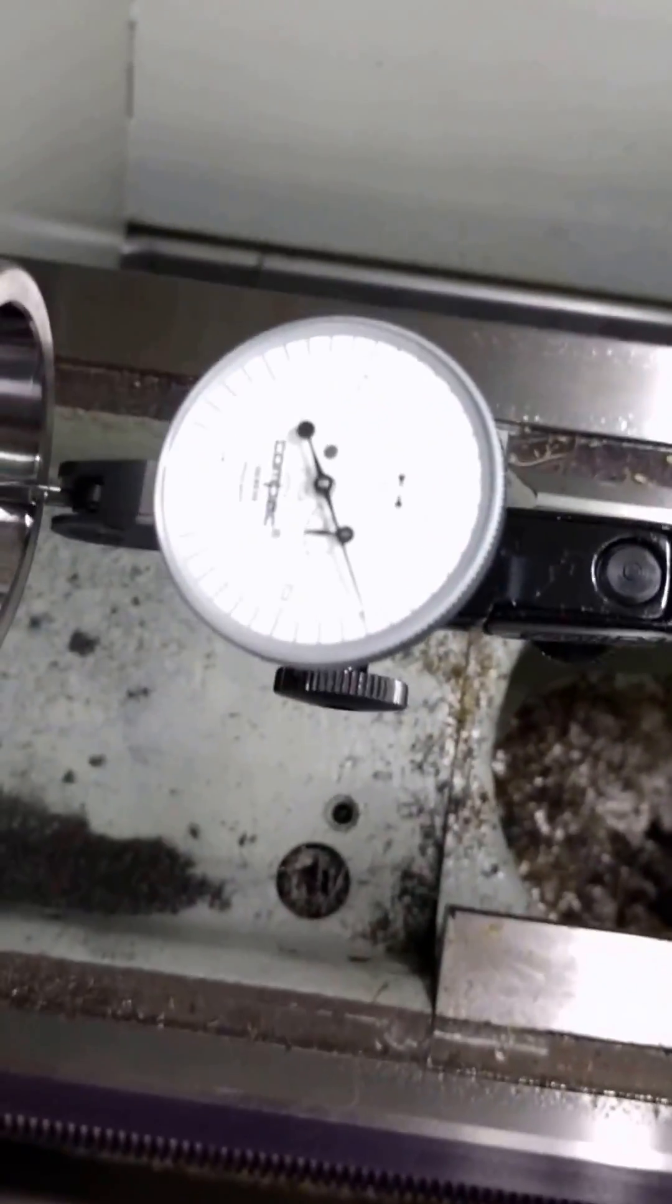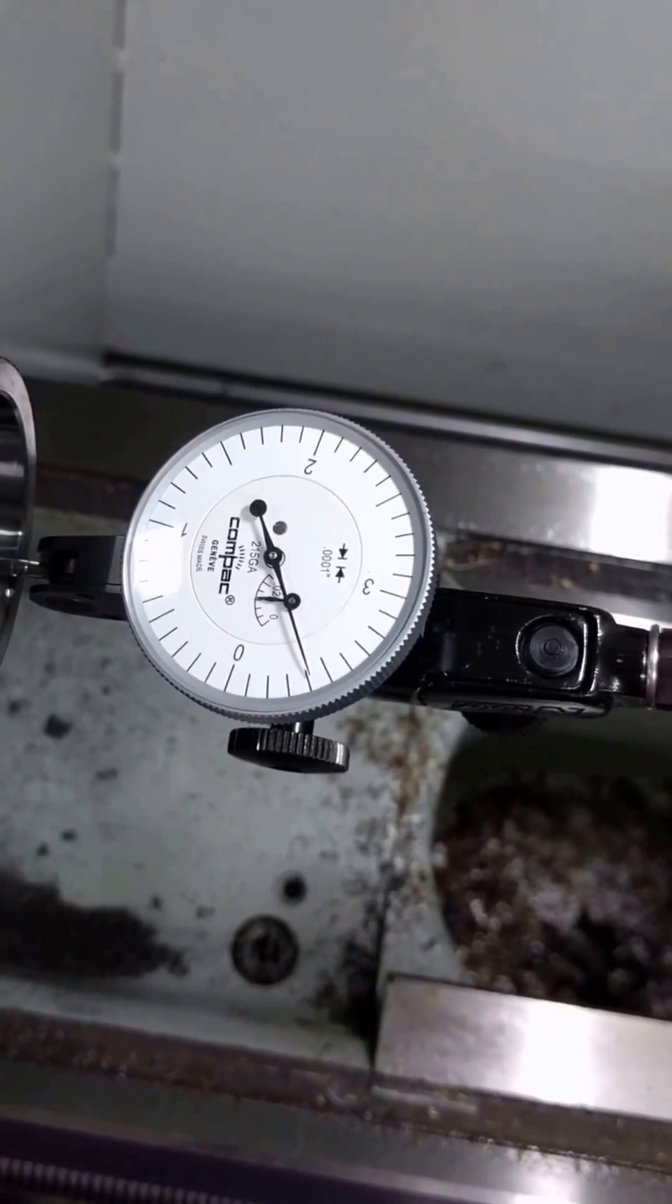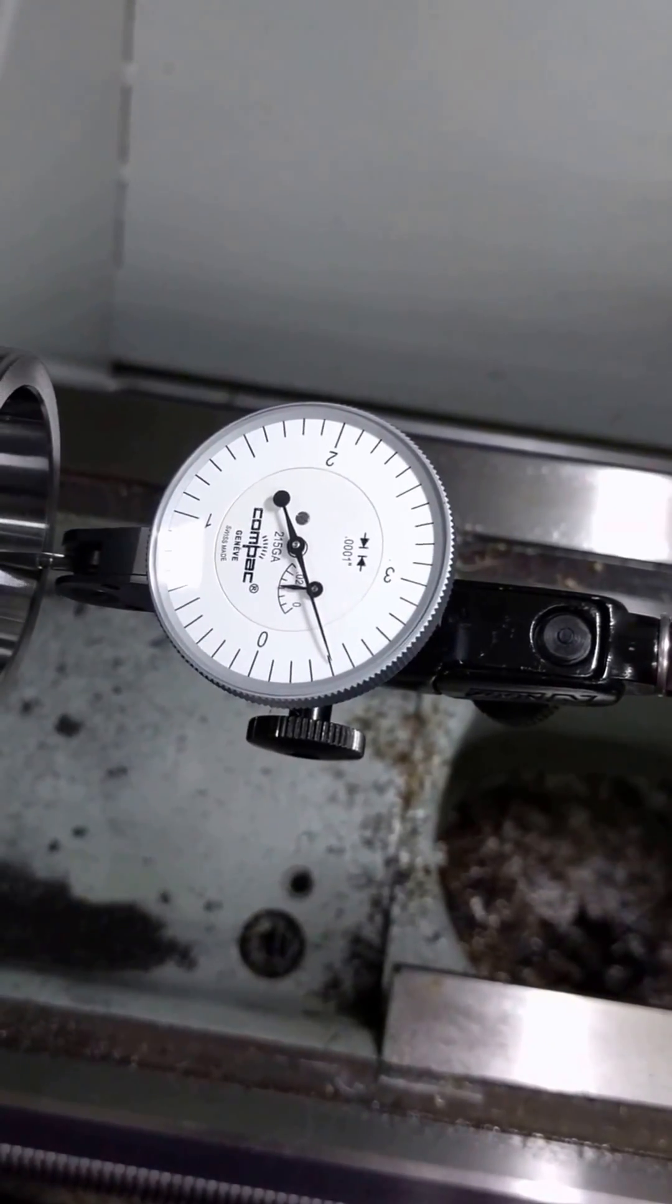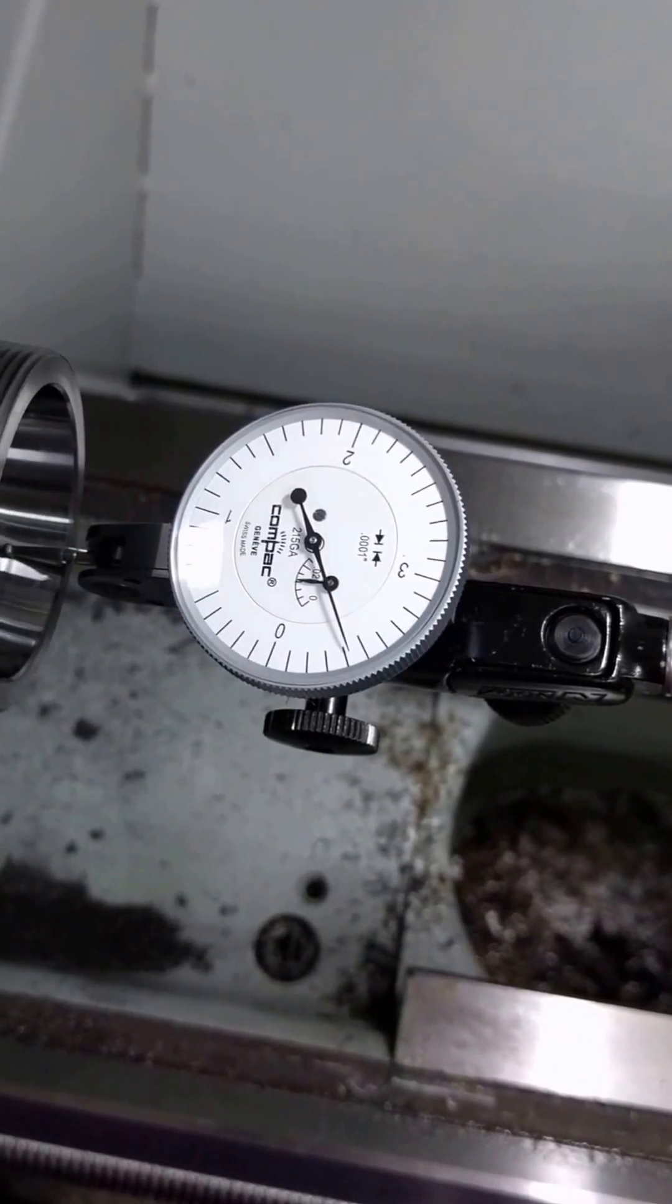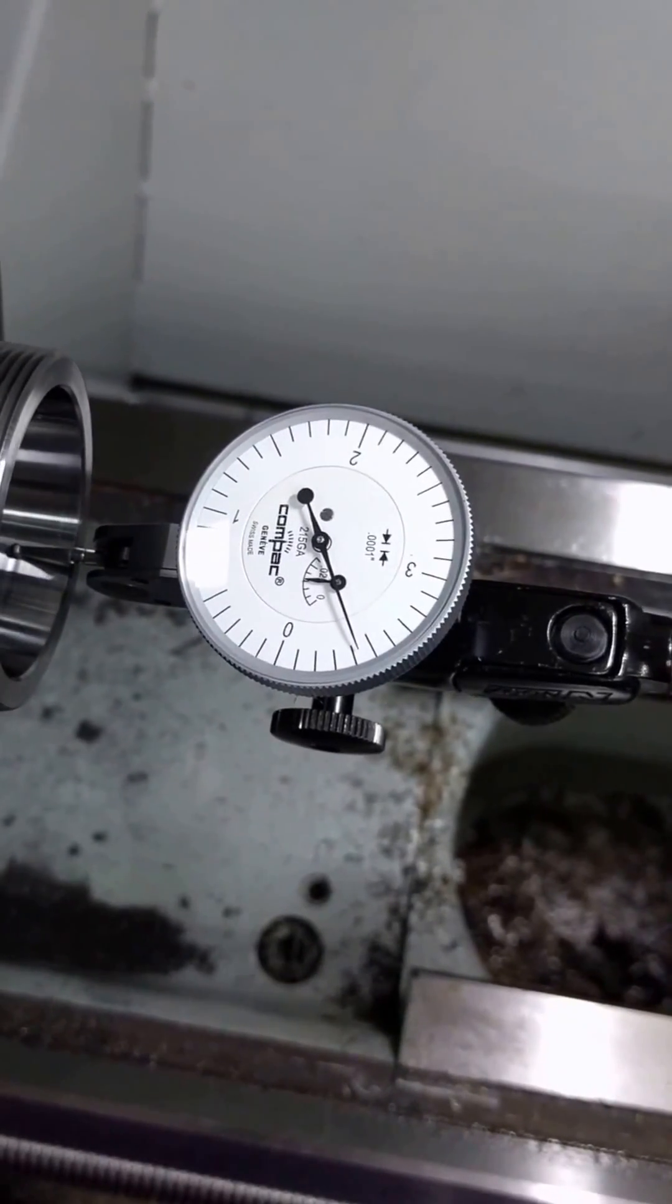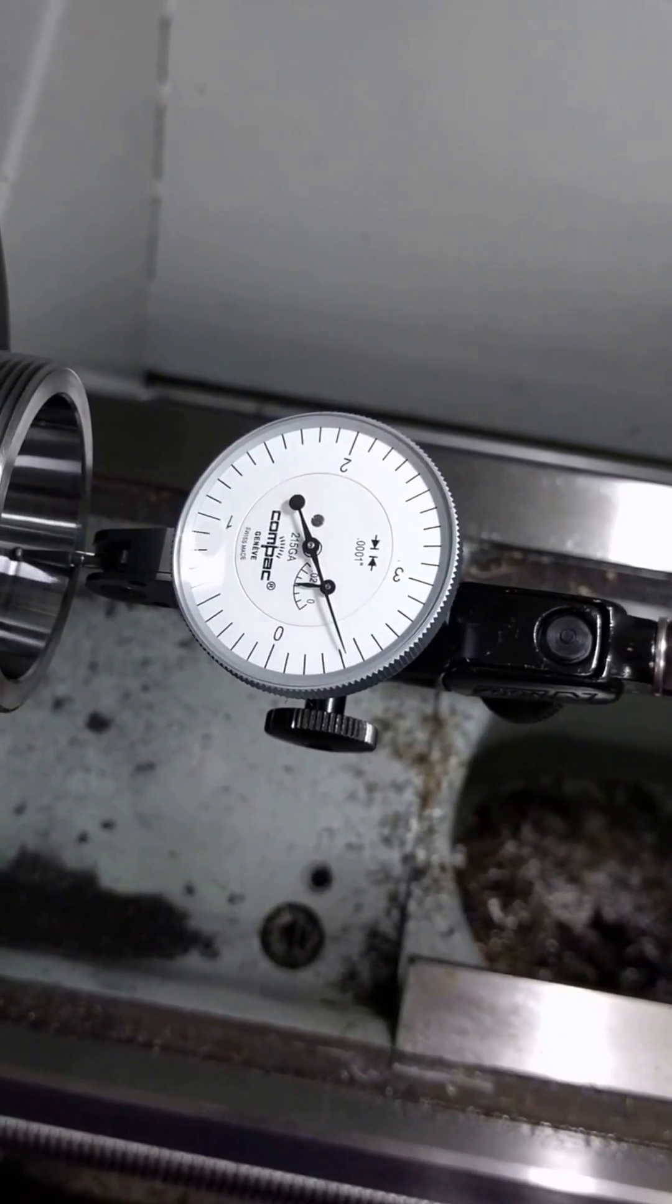Sorry for the wiggle, here we go. Here's the jog function. You'll see that it's pretty tight. This is a compact 215 ga and tenths for the dial test indicator, so I'm quite pleased with how easy it was to get this chuck dialed in.